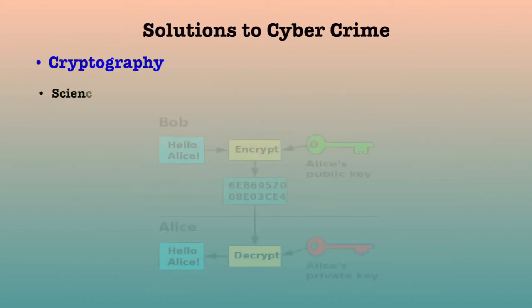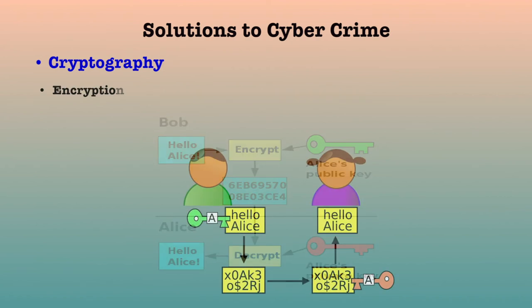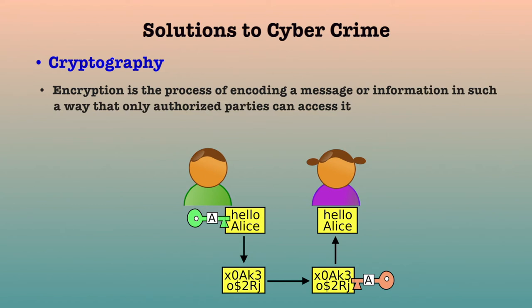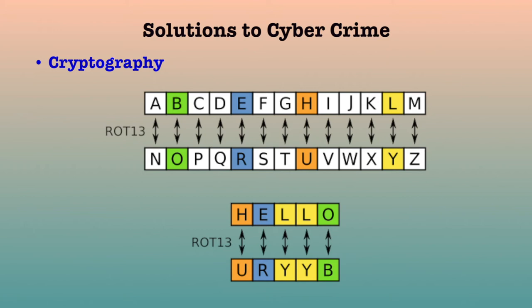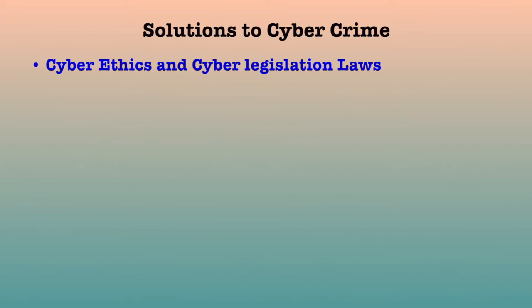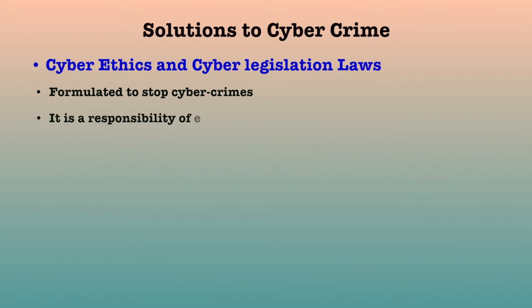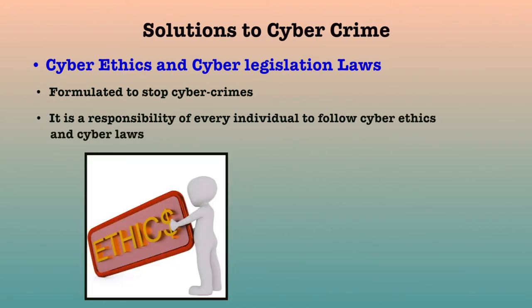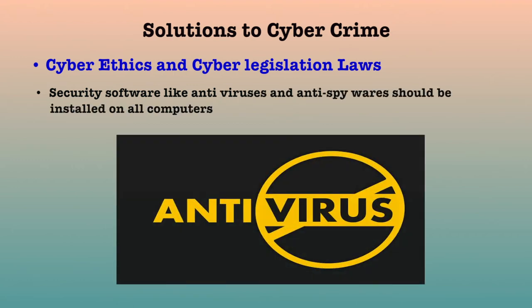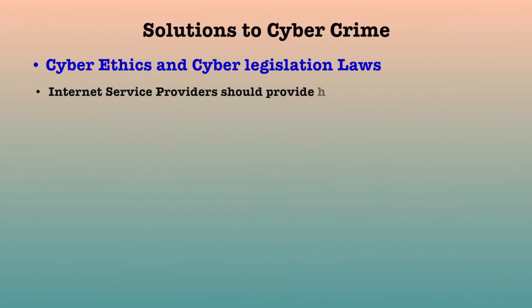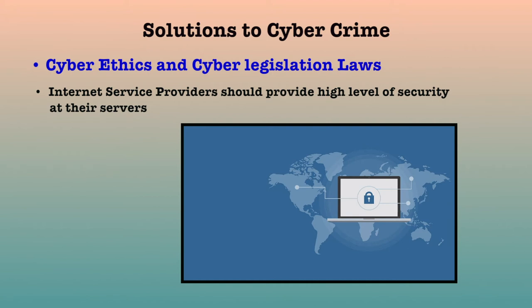Cryptography — cryptography is a science of encrypting and decrypting information. Encryption is like sending a postal mail to another party with a lock code on the envelope which is known only to the sender and the recipient. A number of cryptographic methods have been developed and some of them are still not cracked. Cyber ethics and cyber legislation laws — cyber ethics and cyber laws are also being formulated to stop cyber crimes. It is the responsibility of every individual to follow cyber ethics and cyber laws so that the increasing cybercrime will reduce. Security software like antiviruses and anti-spywares should be installed on all computers. Internet service providers should also provide a high level of security at their servers in order to keep their clients secure from all types of viruses and malicious programs.